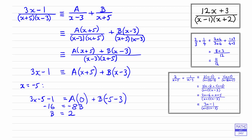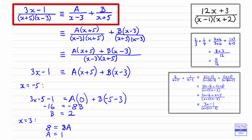We can do a similar thing to find A. We now want the coefficient of B to be zero, so we want x minus 3 to equal zero, meaning x is going to be 3. When x is 3, the left-hand side is 3 times 3 minus 1, so that will be 8. On the right-hand side, A is going to be multiplying 3 plus 5, so we have 8 times A, and B multiplies zero. So we've just got 8 equals 8A, meaning A equals 1.